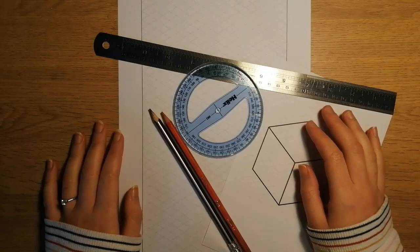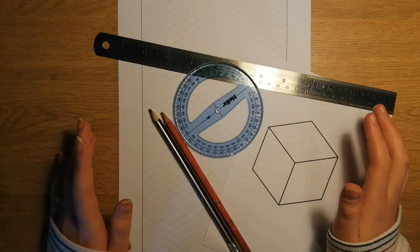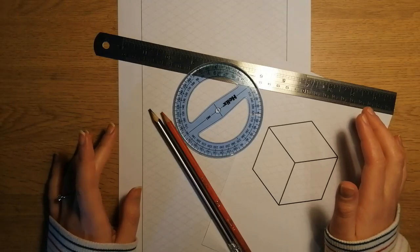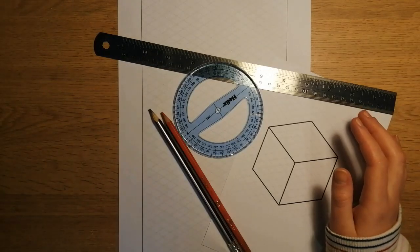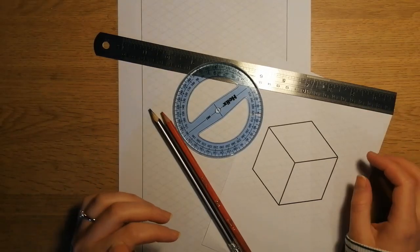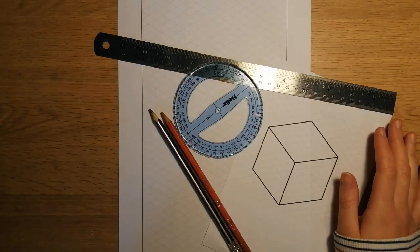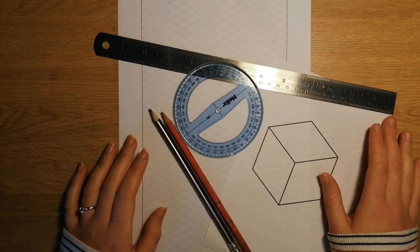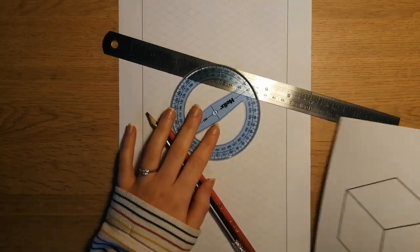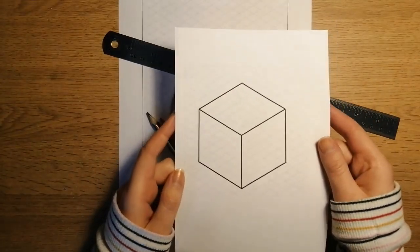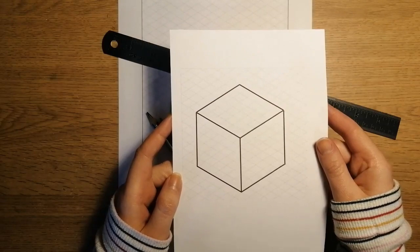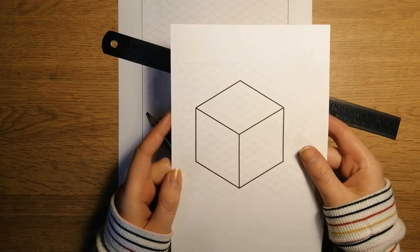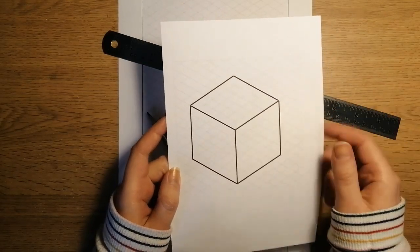Hi there! Today we are going to be looking at isometric drawing techniques. Basically, this is a way of drawing a shape in 3D so that it looks realistic, accurate, and you can see different sides of the shape. This is what we're aiming for - this isometric cube drawing.